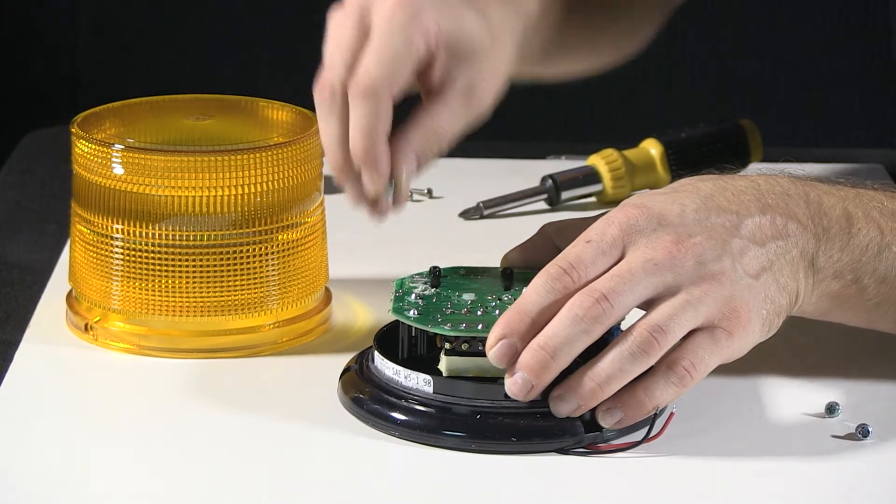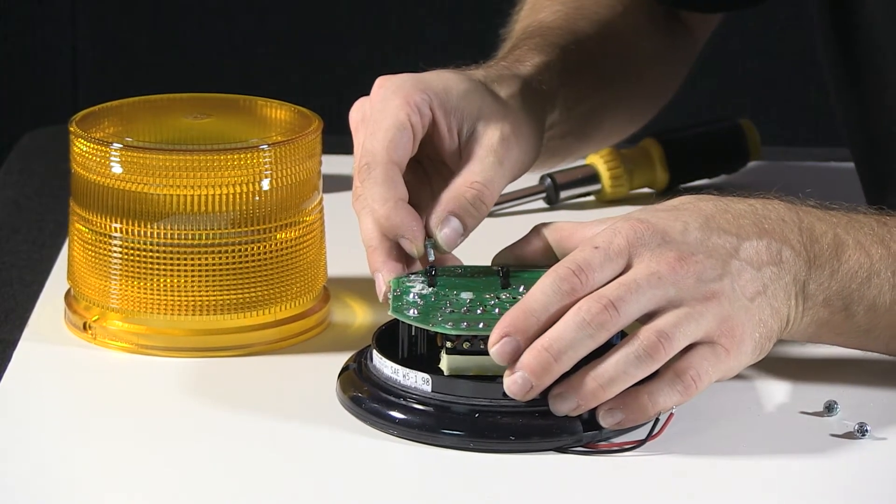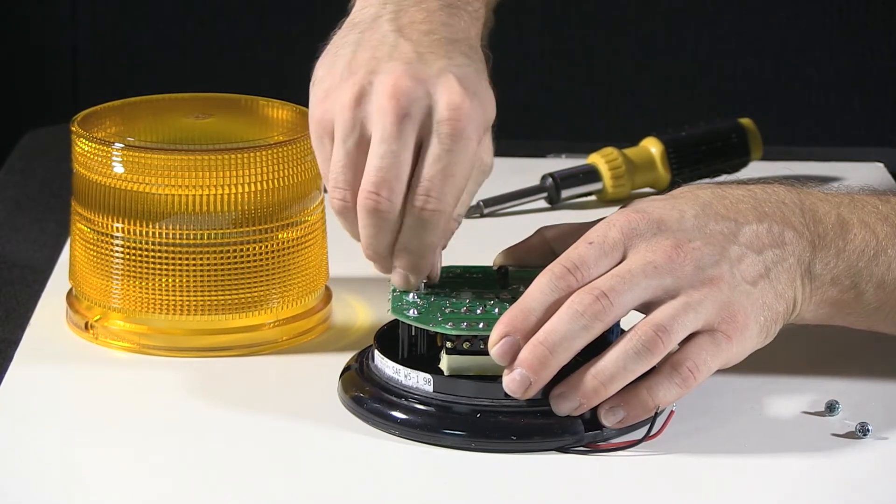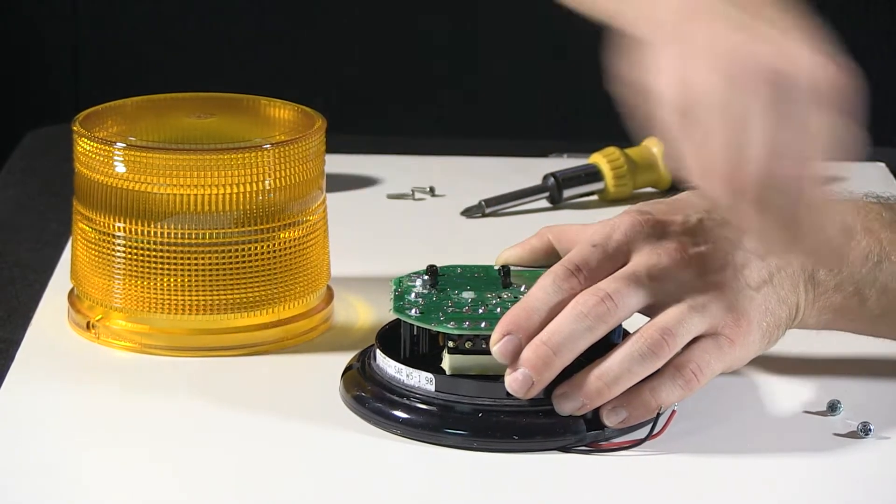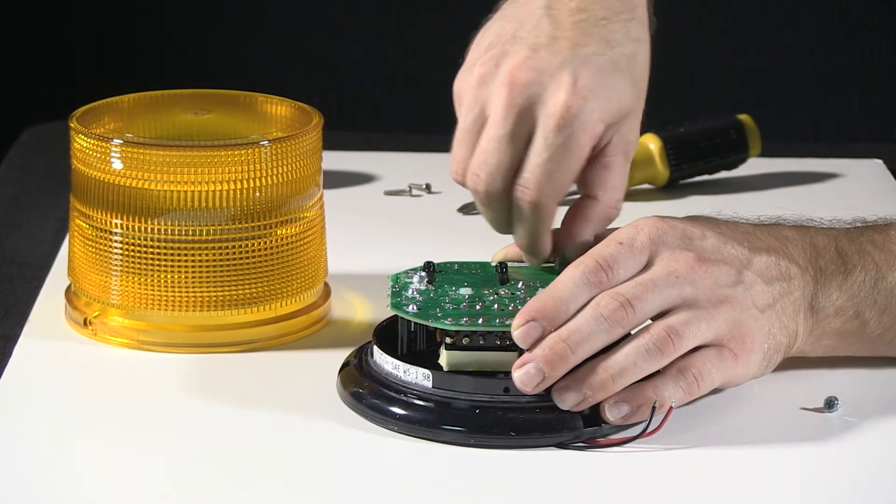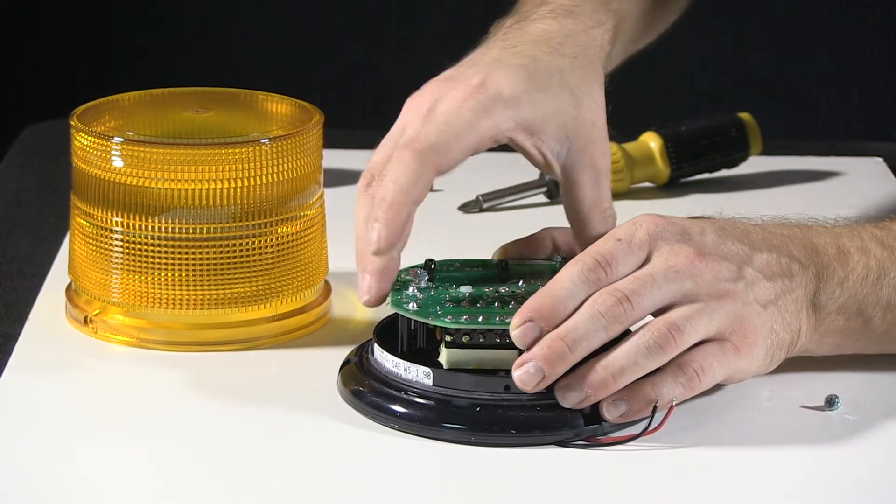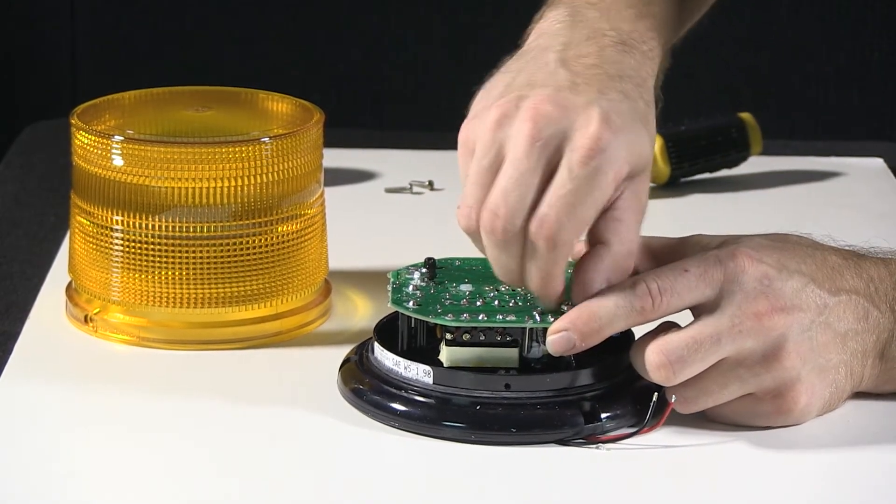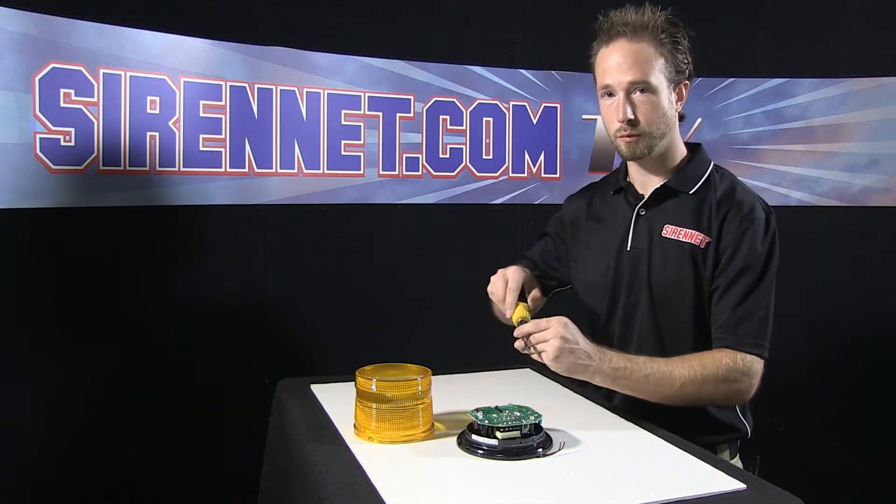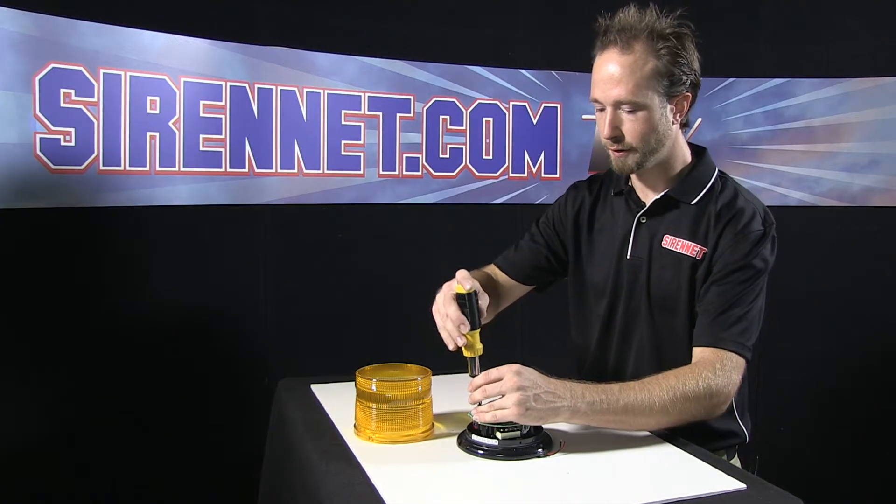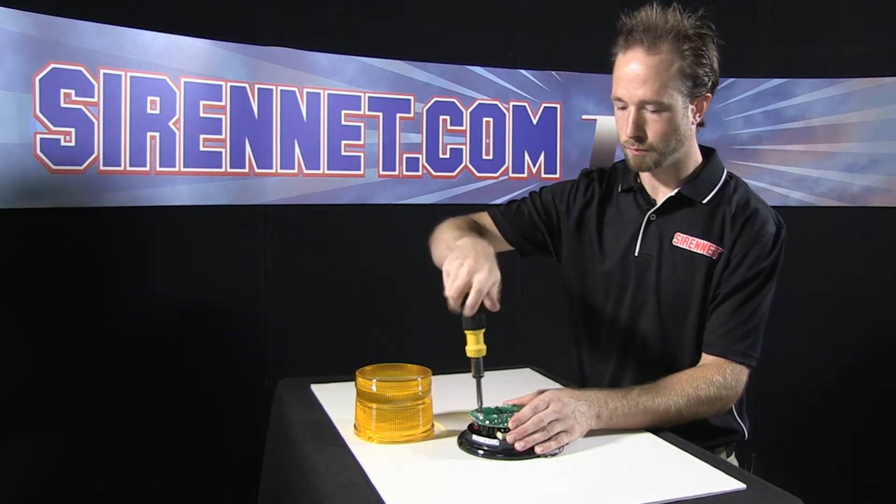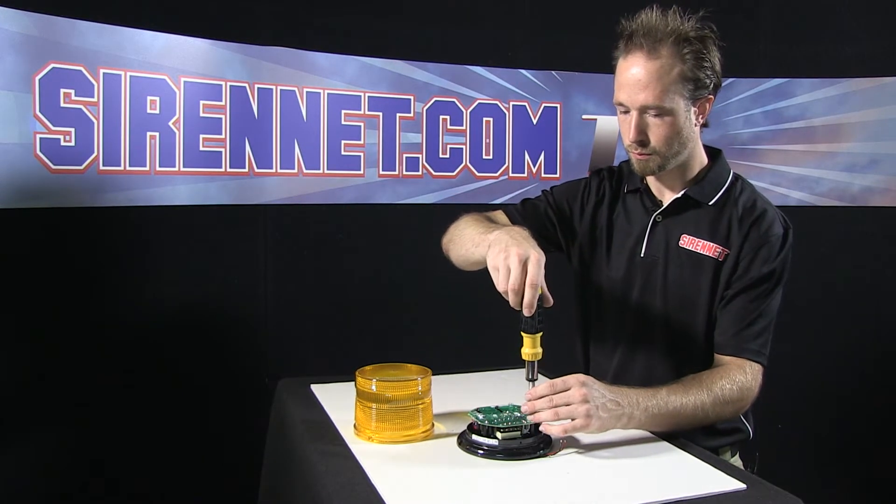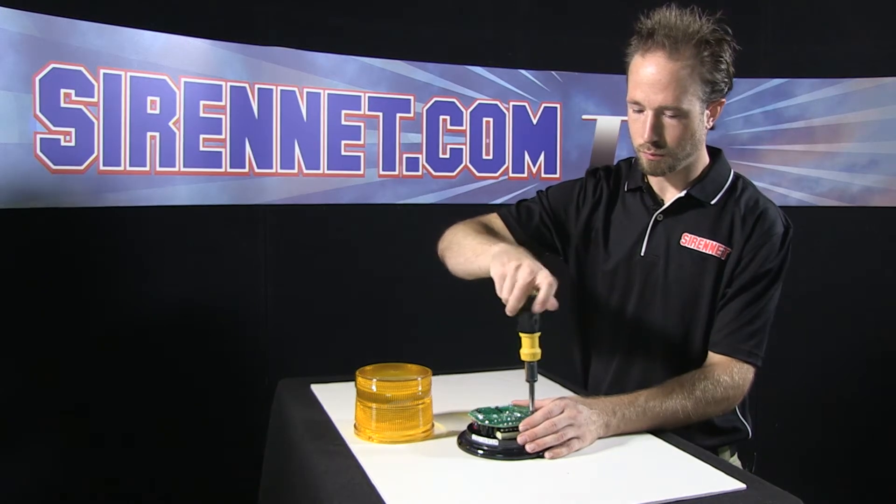The power supply, again, affixes to the three plastic posts on the base. So we'll go ahead and line up the post with the holes on the power supply. Go ahead now, start the screws into the posts, just simply hand tightening them. Go ahead now, snug these down.